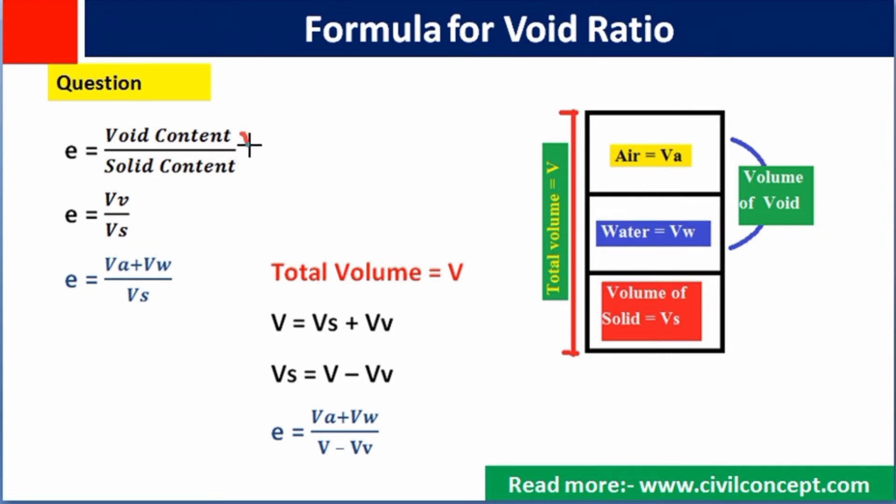The short form of void content is VV and solid content is Vs. Total void content will be what? Volume of air plus volume of water, divided by again solid content.